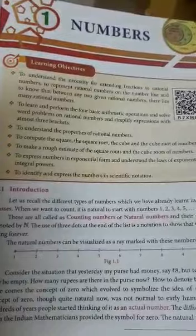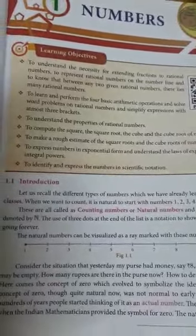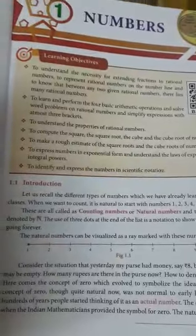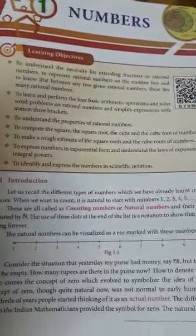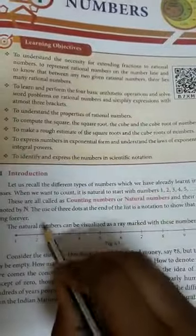So natural numbers means without 0, whole number means include 0 and tends to infinity. Then the natural number is denoted by capital N and the whole number is denoted by capital W.